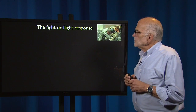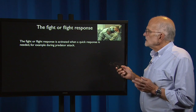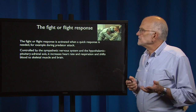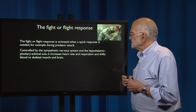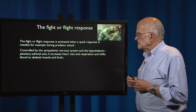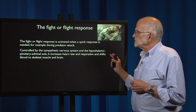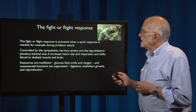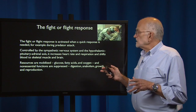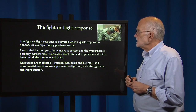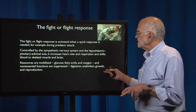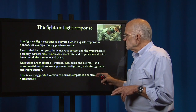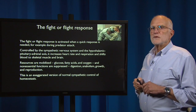There is then our fight-or-flight response. It is activated when a quick response is needed — for example, during a predator attack. It's controlled by the sympathetic nervous system and the hypothalamic-pituitary-adrenal axis. It increases heart rate and respiration and shifts blood from visceral organs to skeletal muscle and brain. Resources are mobilized: glucose, fatty acids, and oxygen. And non-essential functions are suppressed — digestion, anabolism, growth, and reproduction are all suppressed. This is an exaggerated version of normal sympathetic control of homeostasis.